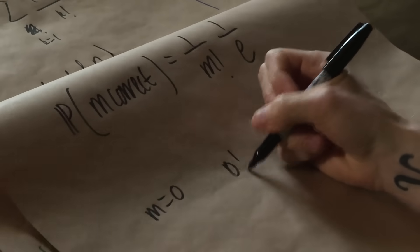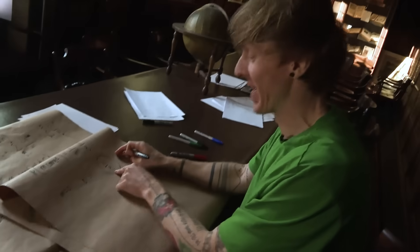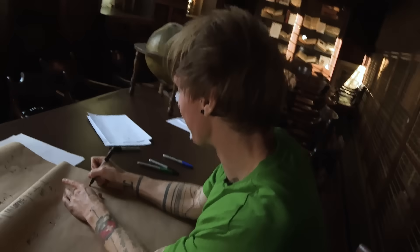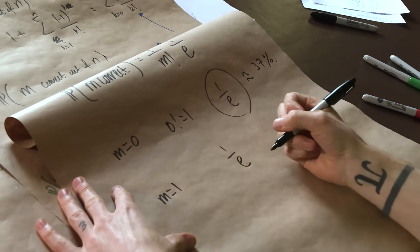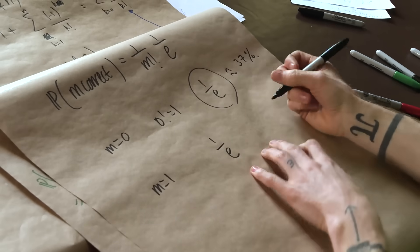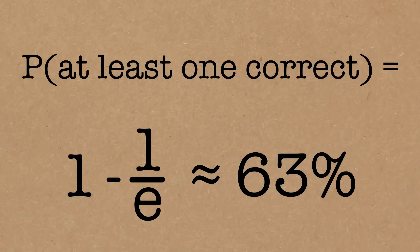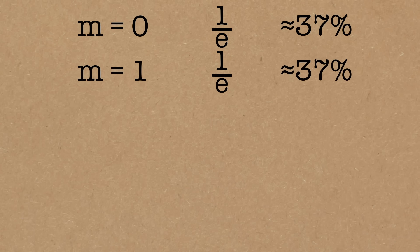Probability of 0 being correct: 0 factorial is 1, so we just get 1 over e — exactly what we found before. Always good that the general result fits with what we did earlier. And 1 over e is about 37%. Then the probability of exactly 1 being correct is also 1 over e, because 1 factorial is 1. So that's also about 37%. Interestingly, we saw the probability of at least 1 being correct was 63%. So more than half of that is coming from the exact case of exactly 1 key being correct.